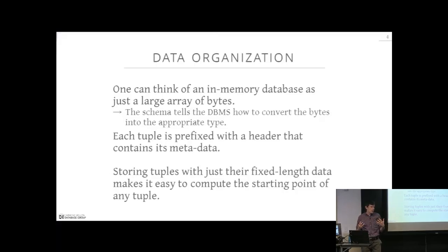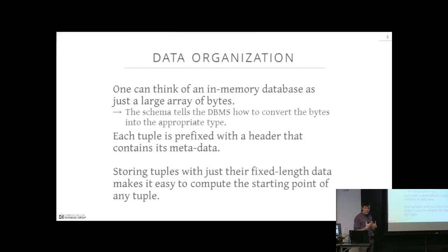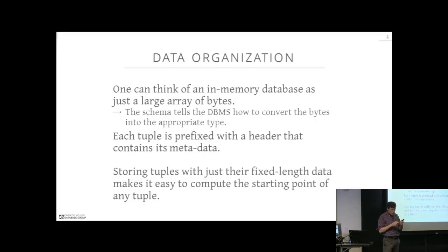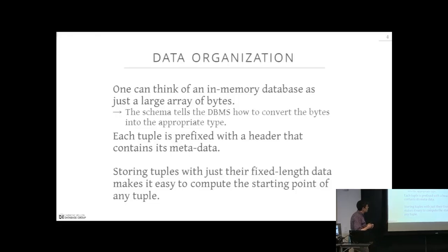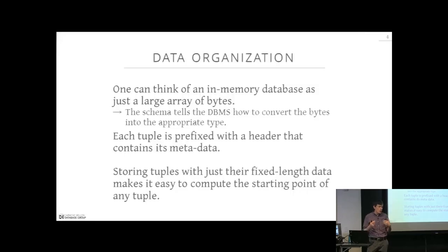You can think of an in-memory database as just a large byte array. You allocate a bunch of bits, and the database system knows how to interpret those bits at different locations and derive the actual type or value for a particular tuple. It does this through its schema — when you call CREATE TABLE, it uses that information to specify where each attribute starts within the byte array. A tuple is always prefixed with a header containing metadata about that particular tuple.